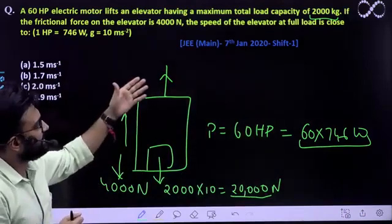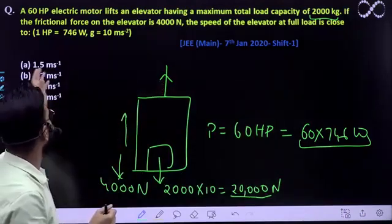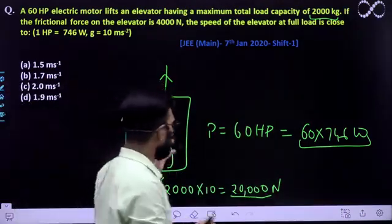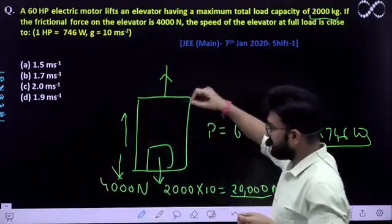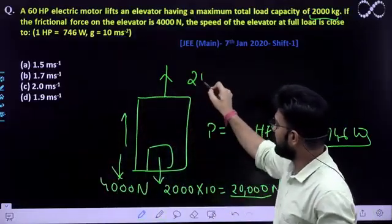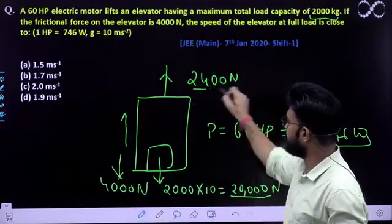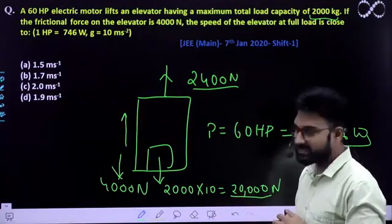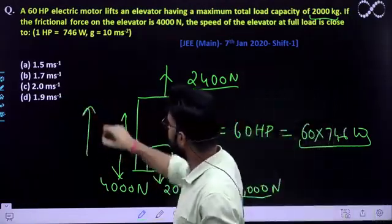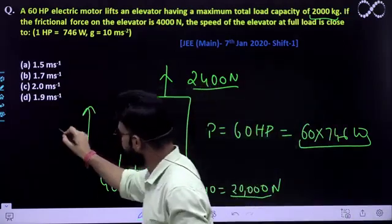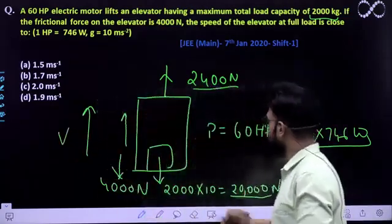So what is asked ahead? The speed of the elevator at full load is close to. That means if the minimum upward force it applies is 24,000, it will have to apply that to balance the forces and move upward at constant speed. At what speed will it go? Okay? We already know its power is given.